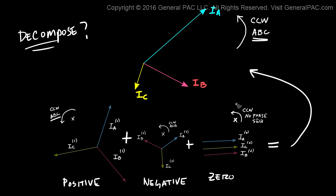This is the same thing as saying our unbalanced system is broken down into positive sequence component, negative sequence component and zero sequence component.